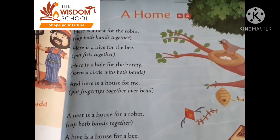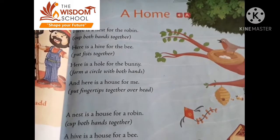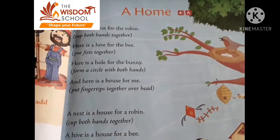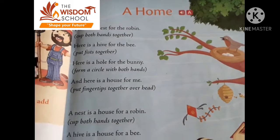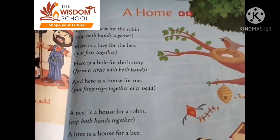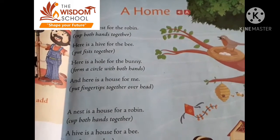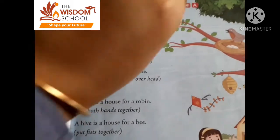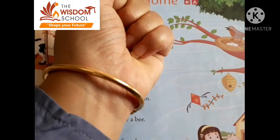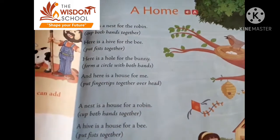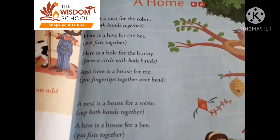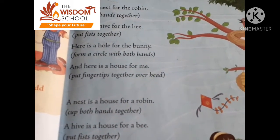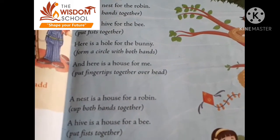Here is a hive for the bee. Bee ke liye kya hai? Hive hai. Put fist together. Fist means kya hota hai? Like this — it's a mutthi banate na jaise hum. Put fist together. Aapne fist ko ek saath lao.